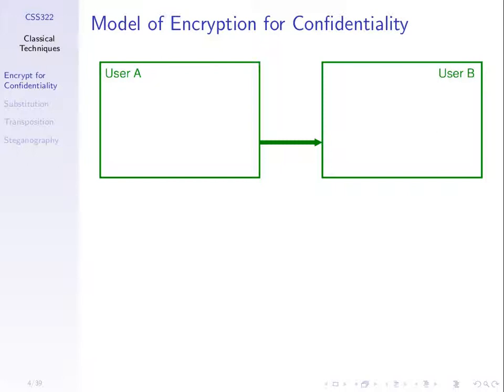A model for encryption has two normal users — A and B, like Alice and Bob. A wants to send confidential data to B across a network. User C is the attacker, whose aim is to find the original information. We assume the attacker can intercept and see any messages sent from A to B in either direction.